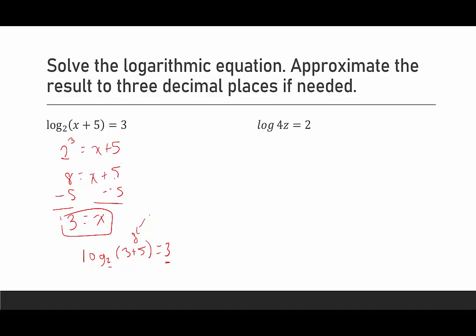Okay, our next example, we have log of 4z is equal to 2. This one's interesting because the base is not given. When the base is not given and it's a logarithm, not the ln, then that means that it's base 10. So this would be 10 squared equals 4z. 10 squared is 100, so 100 equals 4z. Let's get z by itself, we'll divide both sides by 4, and we get 25 is equal to z.